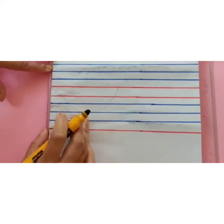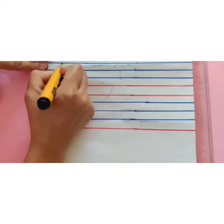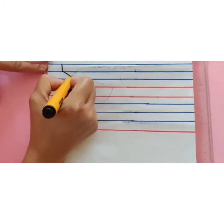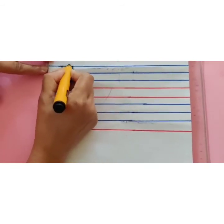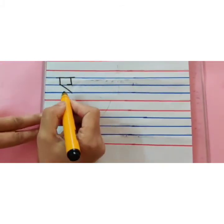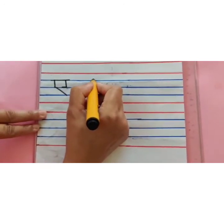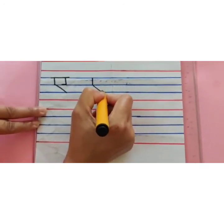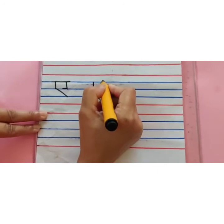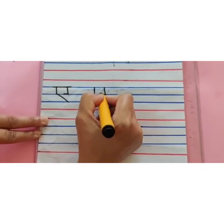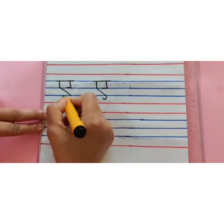Now we are going to write independently. Start with the first blue line — standing line, slanting line, go up, standing line, inside small sleeping line, overhead sleeping line. A — this is also correct. Correct A. One more time: standing line, slanting line, small curve — A with small curve. Then standing line, inside small sleeping line, overhead sleeping line. A — this is also right.